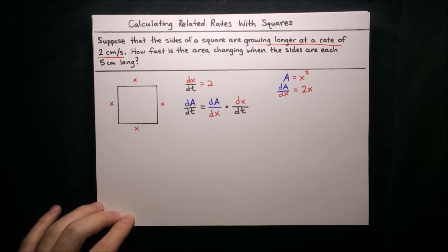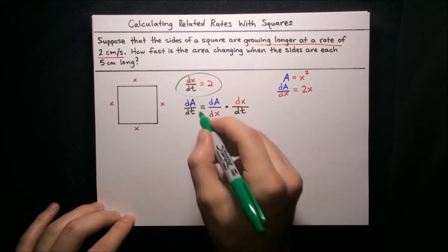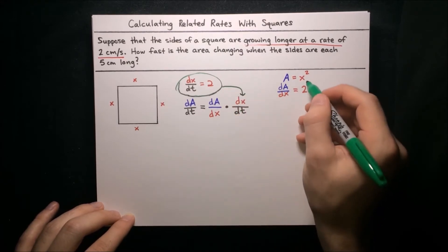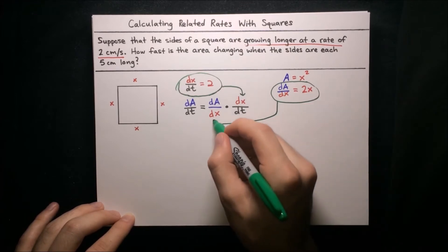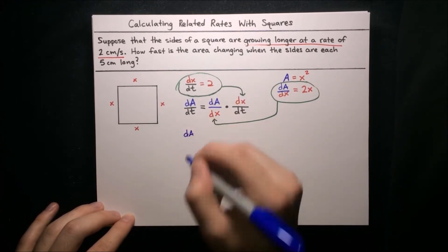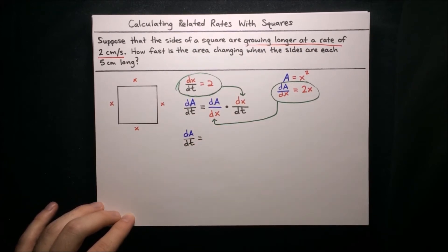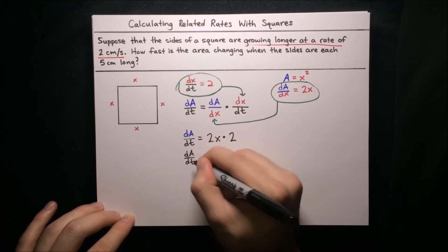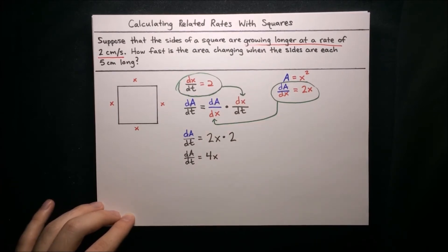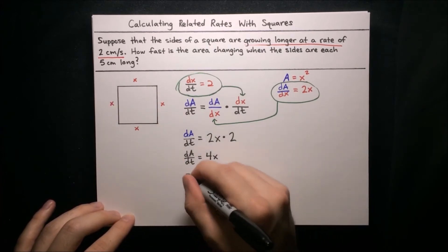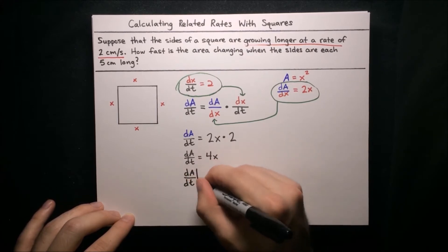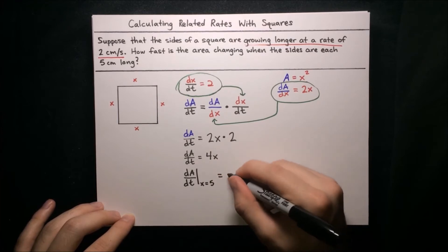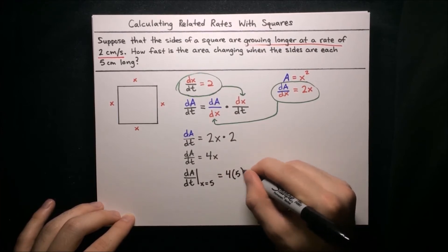Now we can substitute straight into our product. dx/dt is just 2, and dA/dx is just 2x. So dA/dt is equal to 2x times 2, which simplifies to dA/dt equals 4x. Now we turn back to what we want to find: how fast is the area changing when the sides are each 5 centimeters long? dA/dt equals 4x, and when x equals 5, we just substitute in 5 for x: 4 times 5 equals 20.